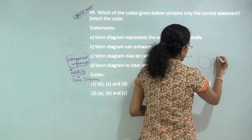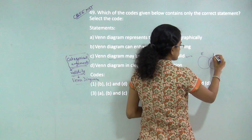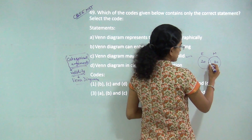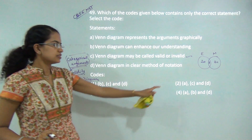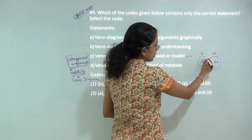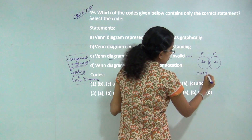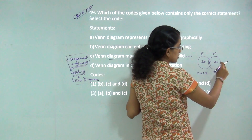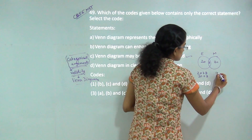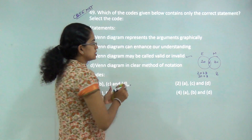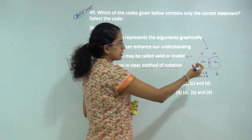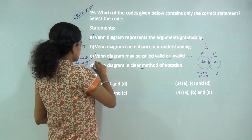Let me draw a simple Venn diagram. This circle represents students passing in English, and this one represents students passing in Mathematics. There are 20 students who pass in English and 30 students who pass in Mathematics. There are 8 students who pass in both, which is the overlapping region. So 20 plus 8 is the total passing in English, and 30 plus 8 is the total passing in Mathematics.